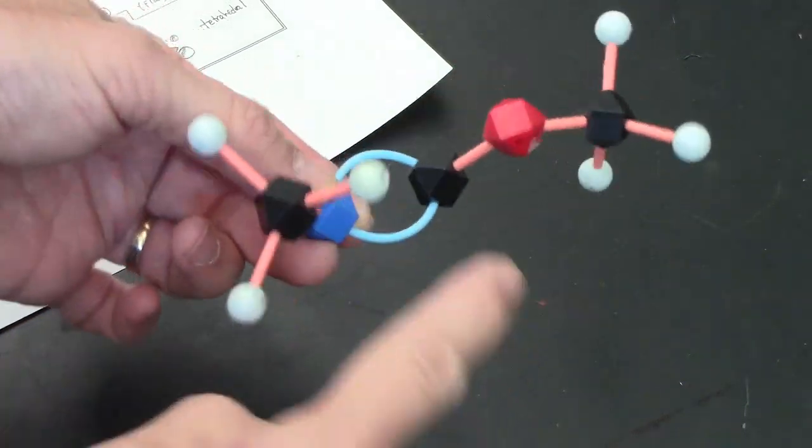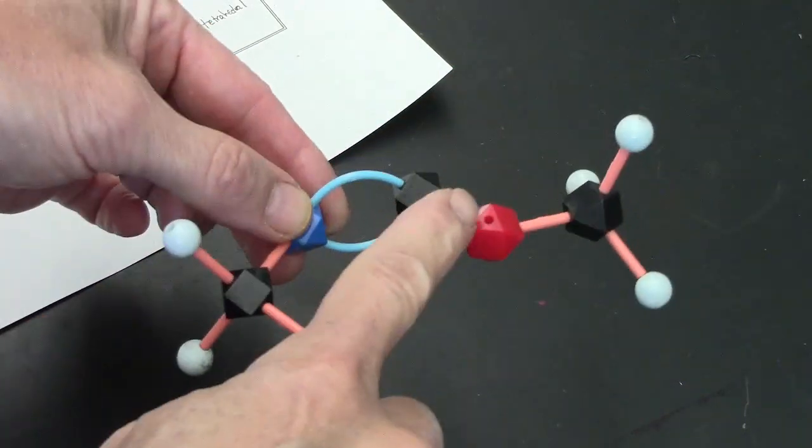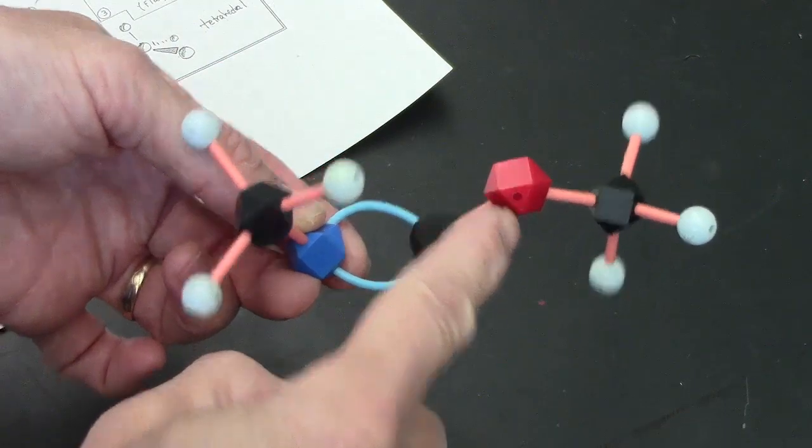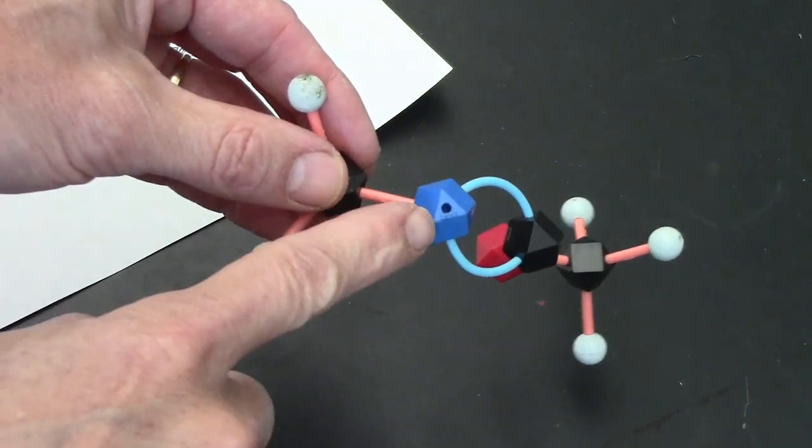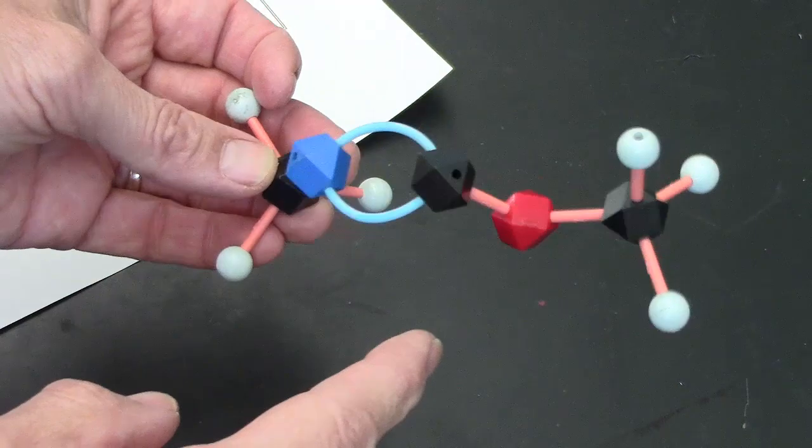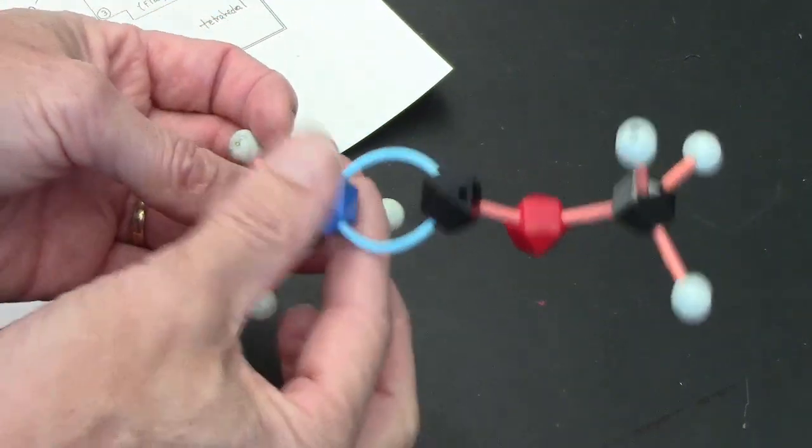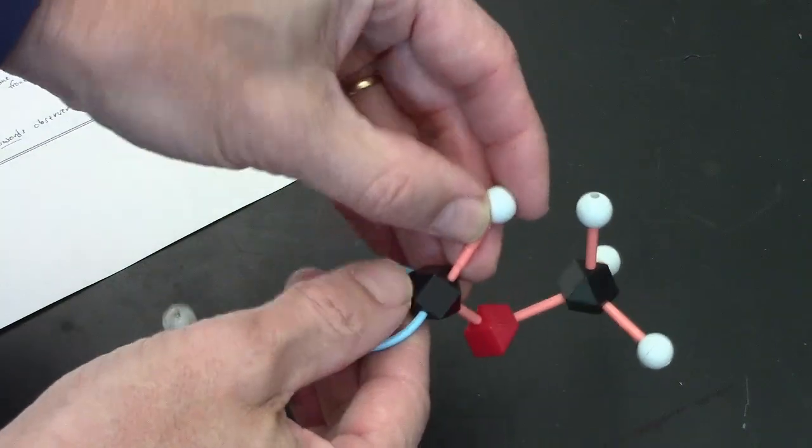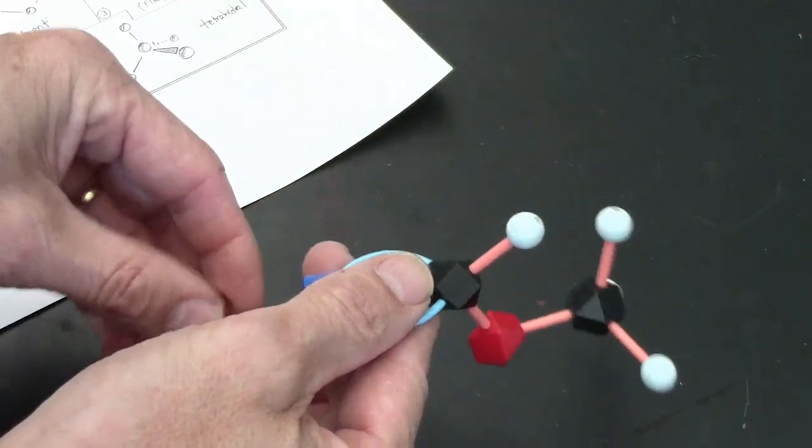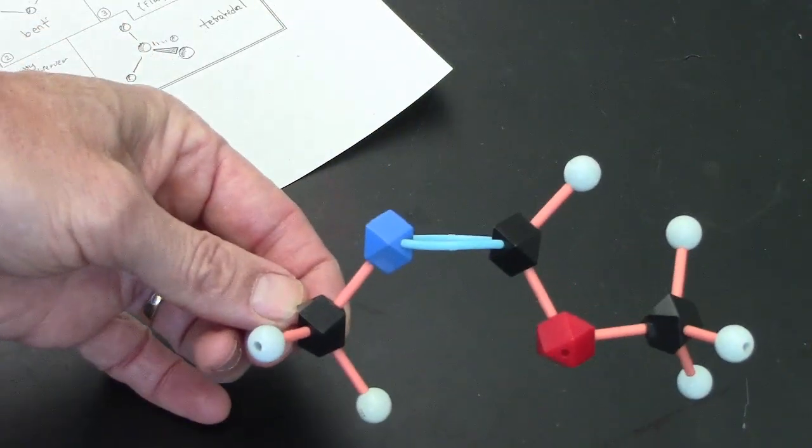Oxygens will have a couple empty spots, and nitrogens will have one empty spot, but carbon should have no empty spots. So when you see this carbon, then you know you've got to fill that spot. That's a molecule.